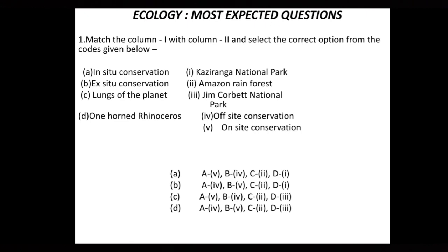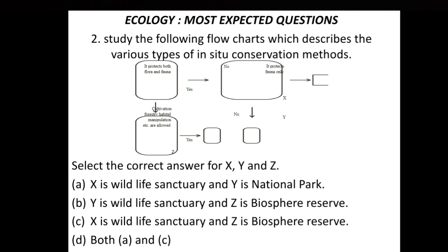The correct option for question 1 is option A. Now the second question: study the following flowchart which describes the various types of in-situ conservation methods. This part discusses different modes of in-situ conservation. So this covers the largest range of natural areas — distinguishing between national parks, wildlife sanctuaries, and biosphere reserves. These are some of the important in-situ conservation categories.